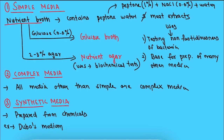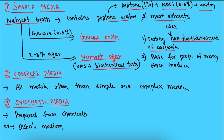Now we are going to discuss in detail about all these media one by one. Starting with simple media: we have nutrient broth, which contains peptone water and meat extracts. Peptone water consists of peptone 1%, NaCl 0.5%, and water. If we add glucose 0.5% to nutrient broth, then glucose broth is formed. If we add 2 to 3% agar to nutrient broth, then nutrient agar is formed. Nutrient agar is used for biochemical tests.